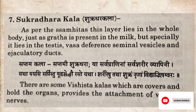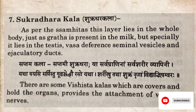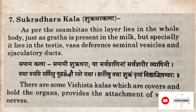Seventh kala is shukradharakala. Saptami shukradhara, yatah sarpranina sarvisharir vyapini, yatah pasi sarpistu gushche shawraso yatah. Sharireshu tathah shukram nirina vidyad bhishwaya. As per the Samhita, this layer lies in the whole body — just as ghrita is present in milk — but specially it lies in the testes, vas deferens, seminal vesicles, and ejaculatory duct. There are some vishishtha kalas which cover and hold the organs and provide attachment of vessels and nerves.